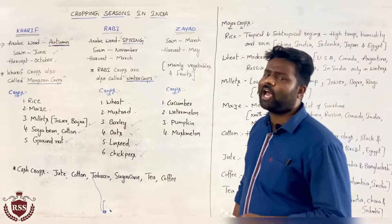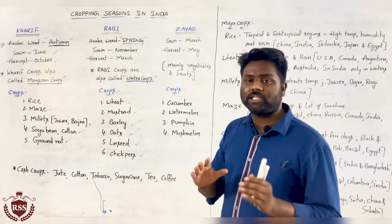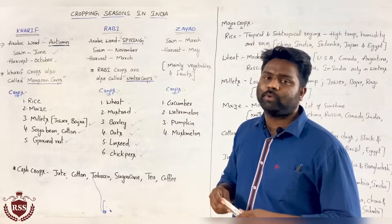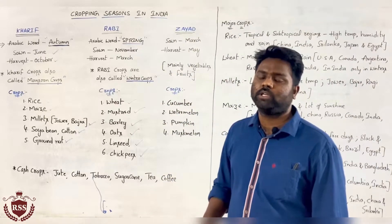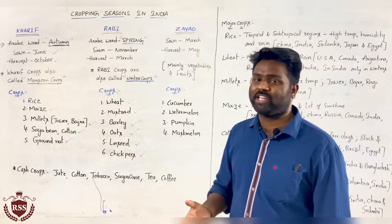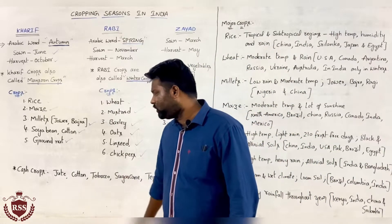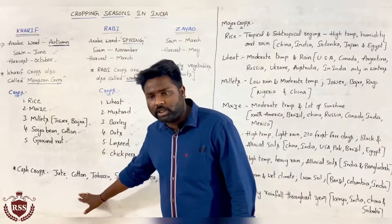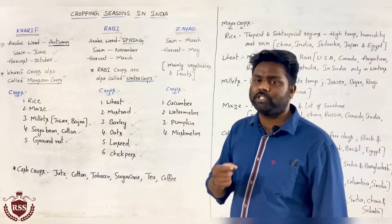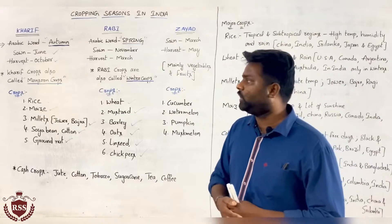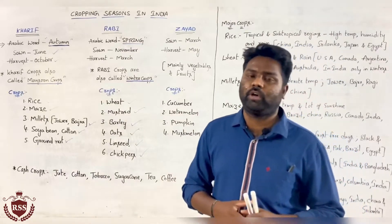Beyond all these three seasons, we have some cash crops which have commercial value. Those cash crops are harvested in any month, because they give cash value and are useful to society. Those cash crops are jute, cotton, tobacco, sugarcane, tea, and coffee. These all are the cash crops which have some commercial value in markets. This covers the Kharif, Rabi, and Zayad cropping seasons in India, most important for competitive purpose.